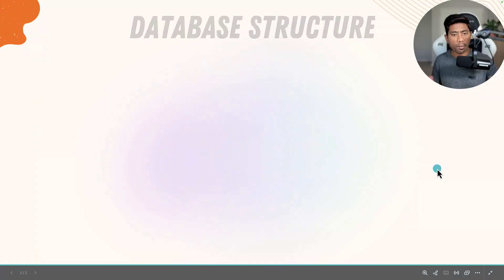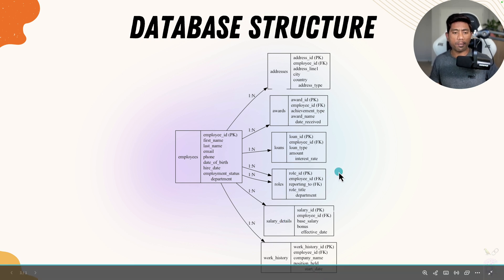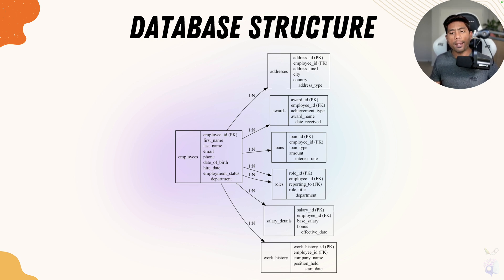I really want to show you that complex database structures are also supported with our Model Context Protocol. Let me show you a quick database diagram. This is the database structure — it is a bit complex. This is an employee table that has relationships with many different tables: the address table, awards table, loans table, roles table, salary details table, and work history table. An employee can have multiple addresses, work history at multiple companies, multiple salary records, different roles, home or car loans, and multiple awards.